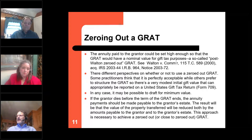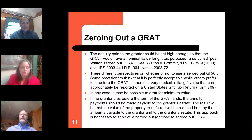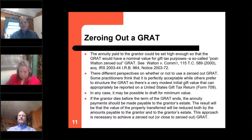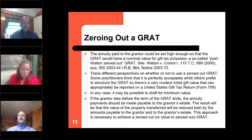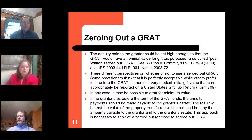On zeroed-out GRATs: many lawyers think you can set the annuity at such a size that the value of the remainder is exactly zero. But there are a couple of issues. If you make it a small percentage like 1% or 0.5%, and the IRS can show the valuation was wrong, there will be an automatic adjustment. Good forms — like those at Interactive Legal — have an automatic provision to change what has been paid if the value has been incorrectly determined, either taking money back from or giving more to the grantor, in accordance with language the IRS has approved for charitable remainder trusts.